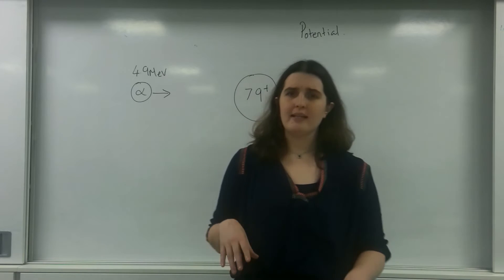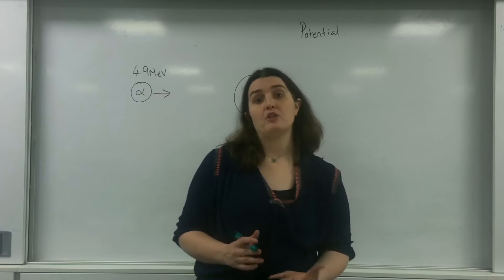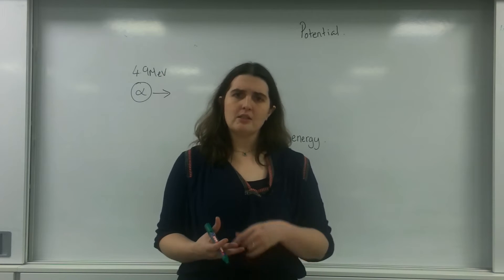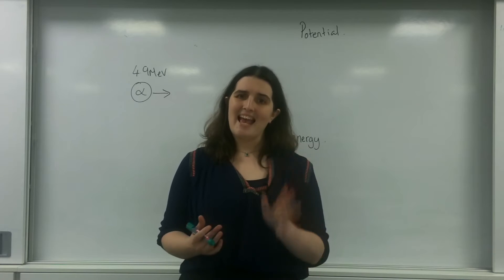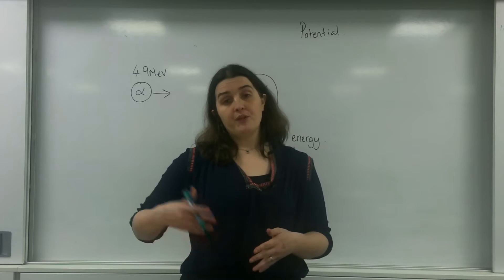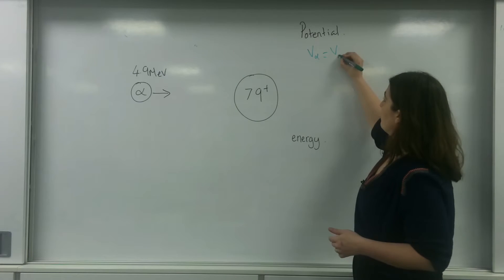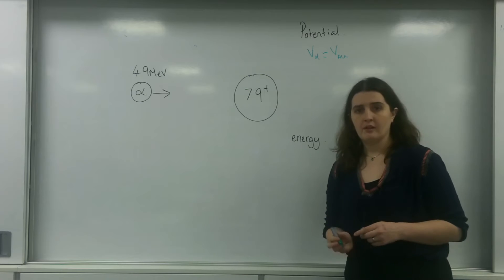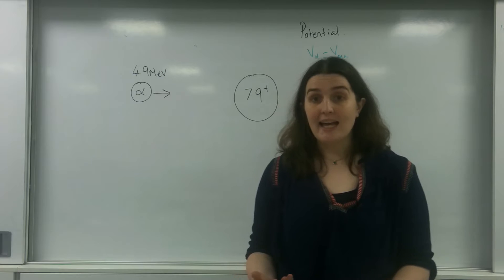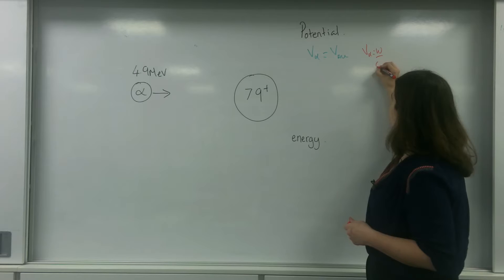I'm going to do this in two ways and use both methods. First I'll use the idea of potential, which is the one I may use in the exam. Potential is energy per unit charge in the case of electric fields. So I'm finding when the potential of the alpha particle equals the potential of the gold. The information I know about the alpha particle is how much energy it has. Alpha potential equals energy over charge.